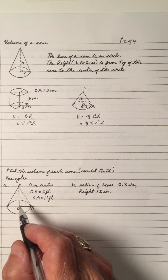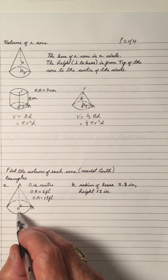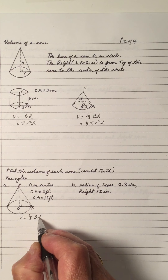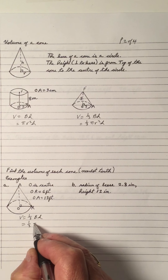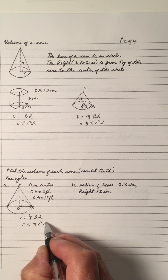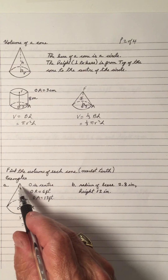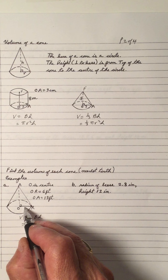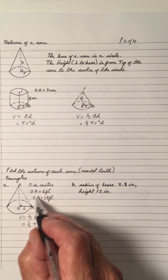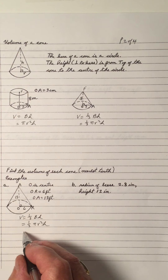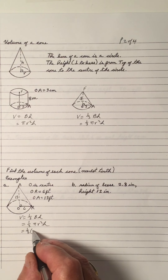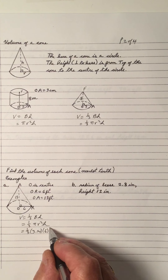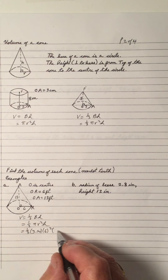You can write the formula as: volume is one-third base area times height, one-third π r² h. So we have, in part (a), a cone where the center of the cone is O. OR is the radius of 6, and OA is the height of 13. So, if you plug it into the formula: one-third times 3.14, and the radius is 6 squared times the height of 13.